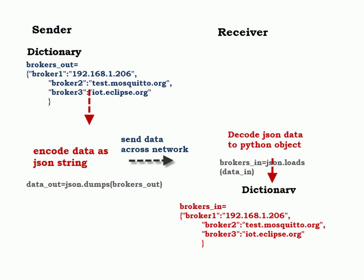The reason JSON has become so popular is because it's very easy to take an object in a language, in a program, and transmit it to another system and read it back into the program as a data object.